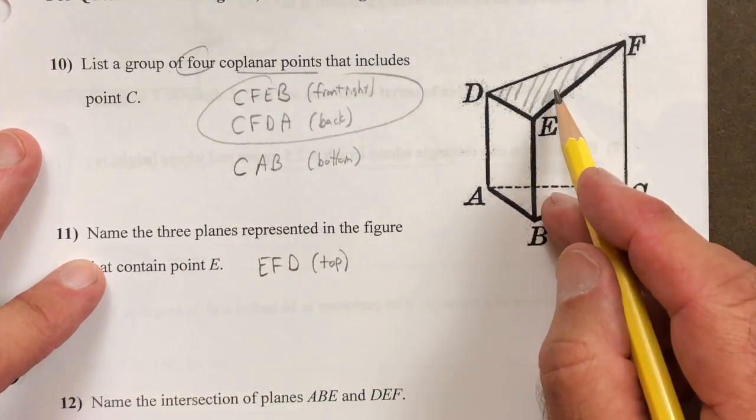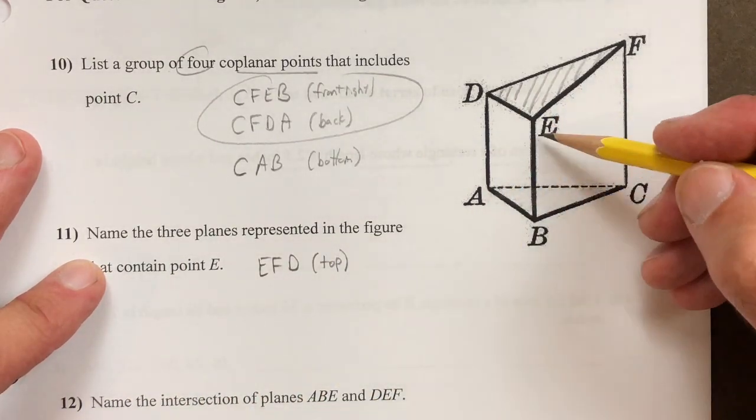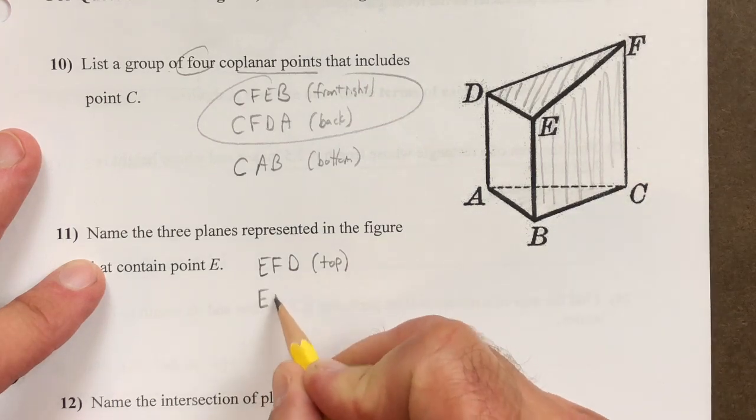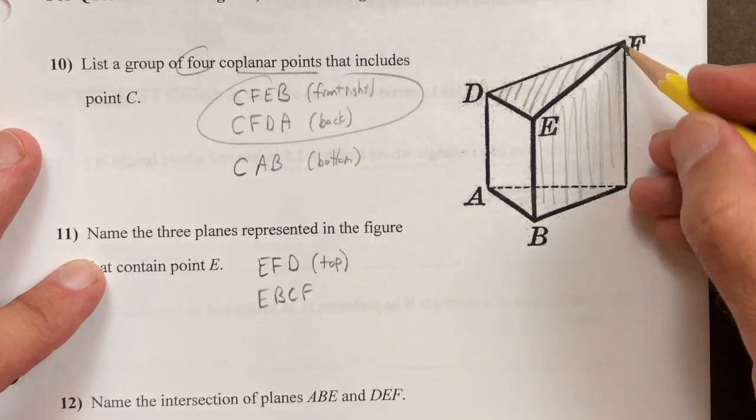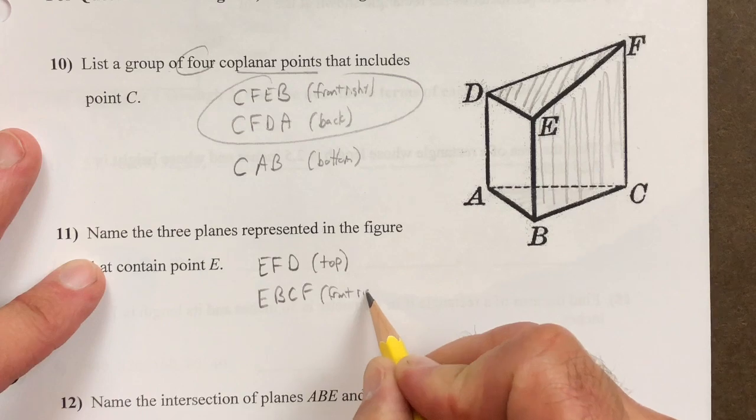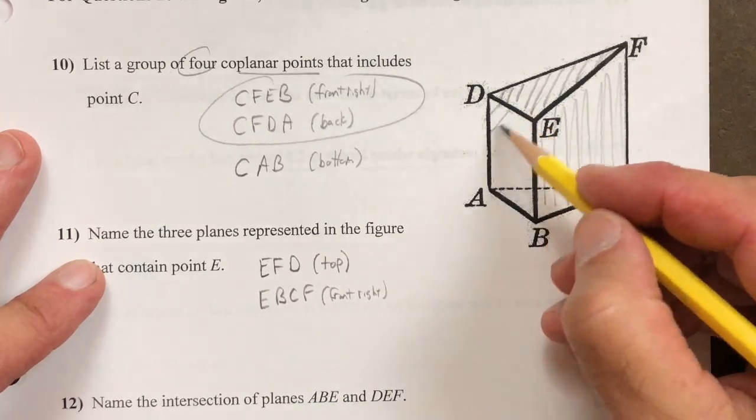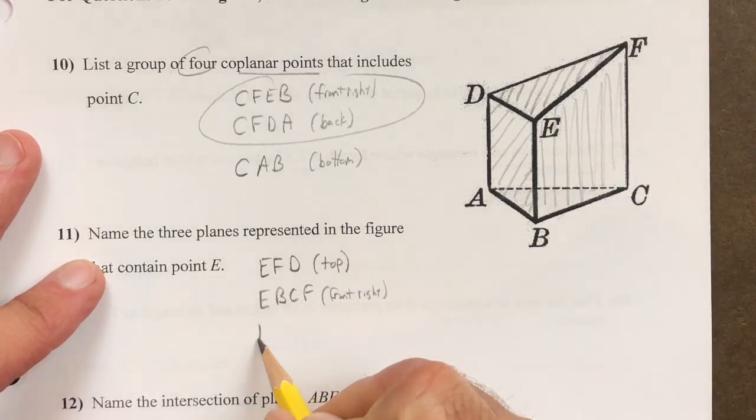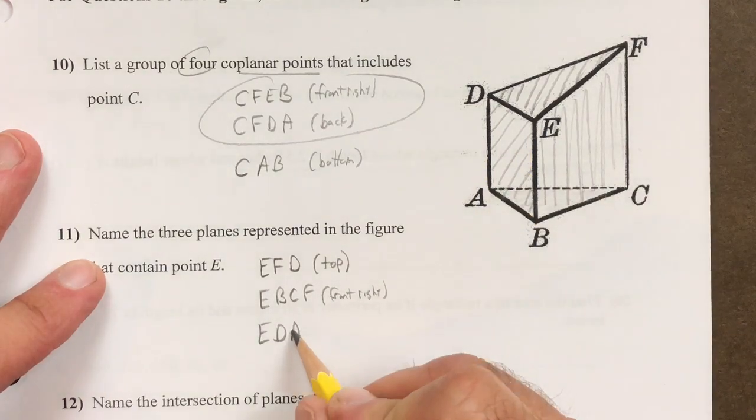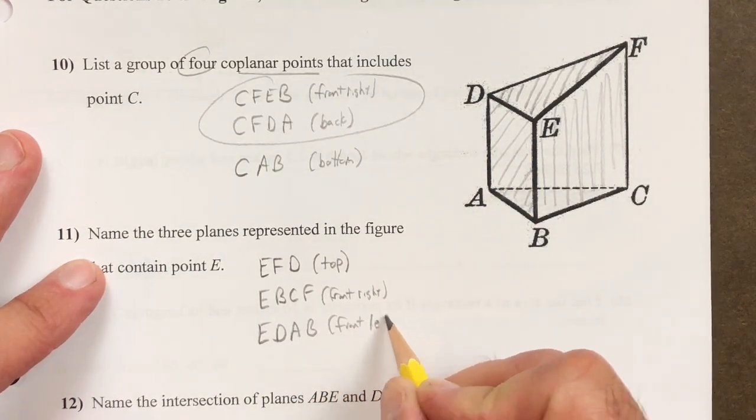Number 11 doesn't have any restrictions on how many points it needs to be as long as you have three planes. So we have the top plane E, F, and D. We have the front right which is C, F, E, and B. And we have the front left plane which is the E, D, A, and B plane.